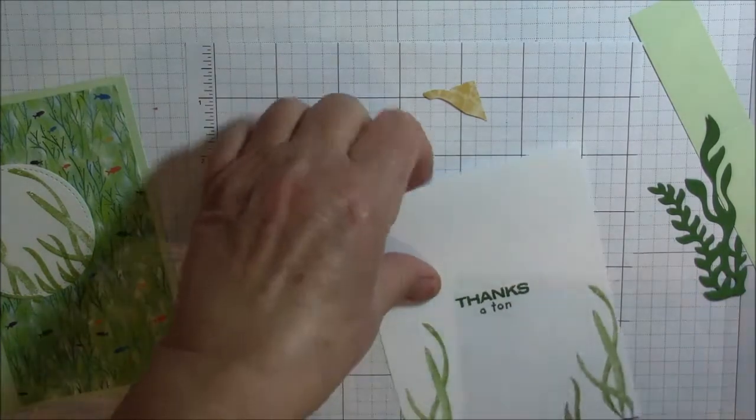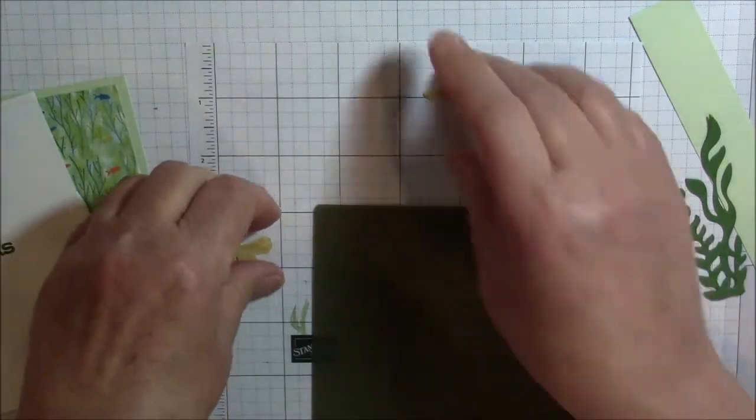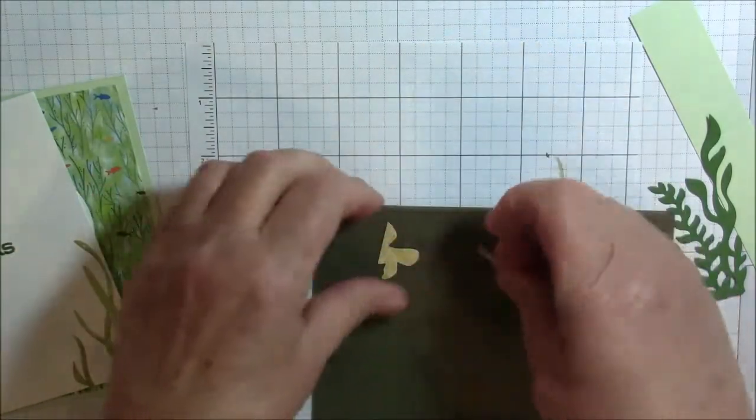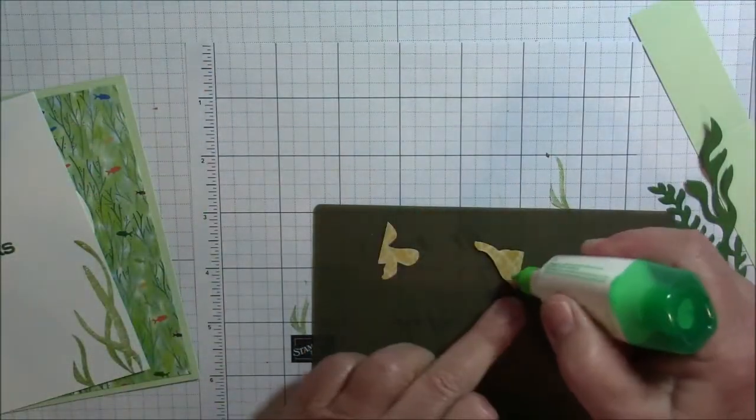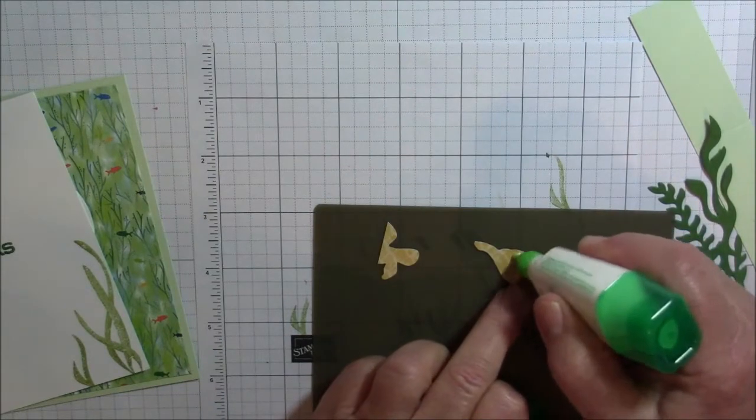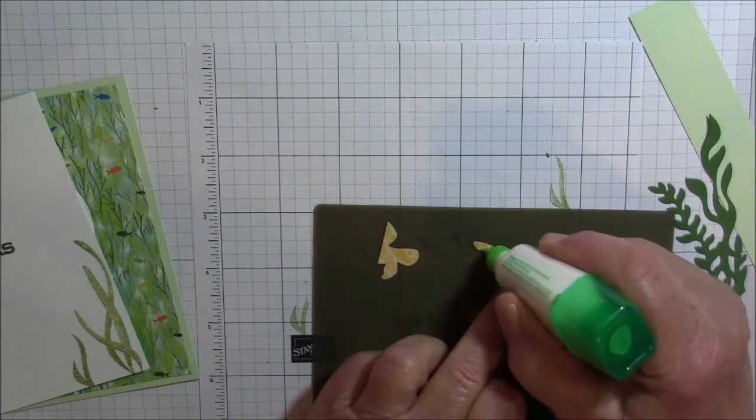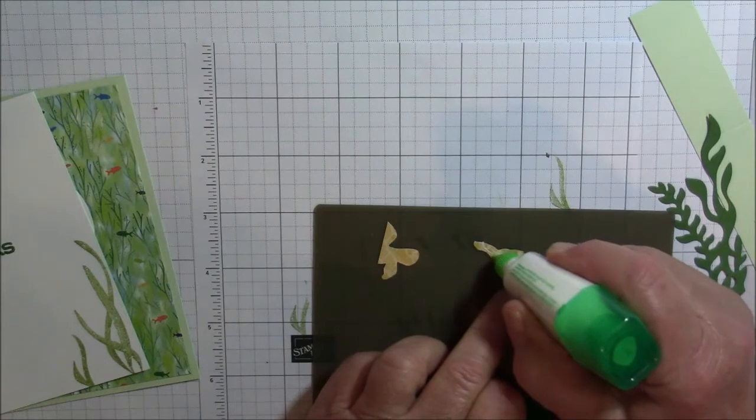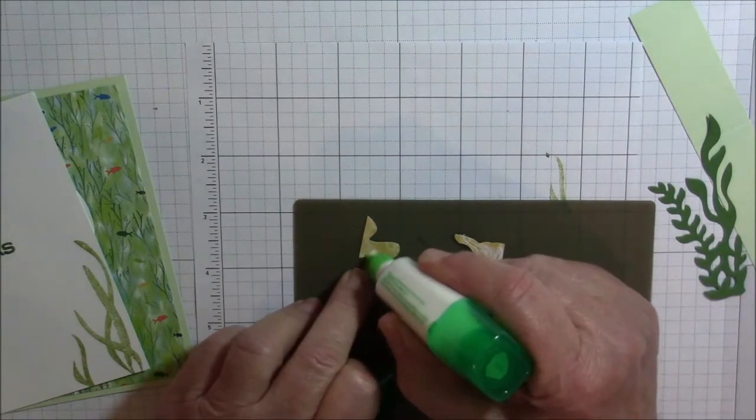Let me grab my silicone mat. I am going to grab my liquid glue and put some glue on here. I will show you how you can jazz up this card with these little pieces that you would normally probably throw away.